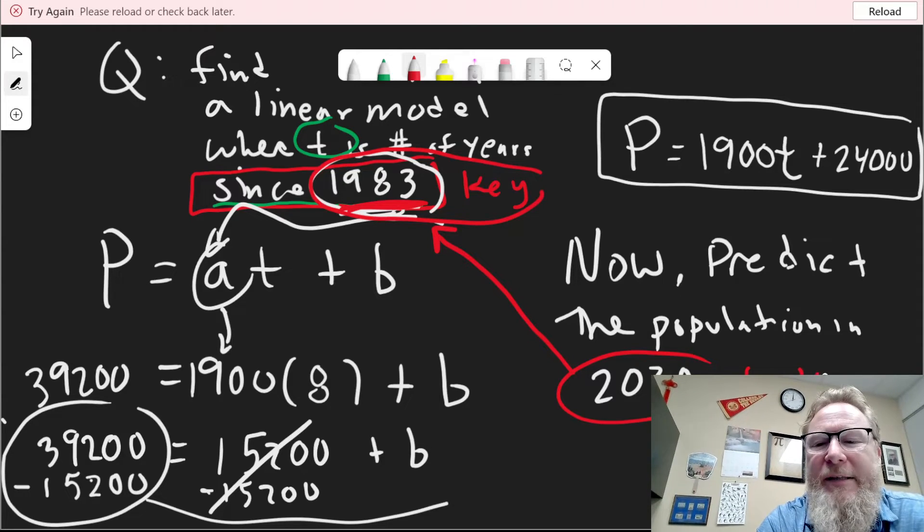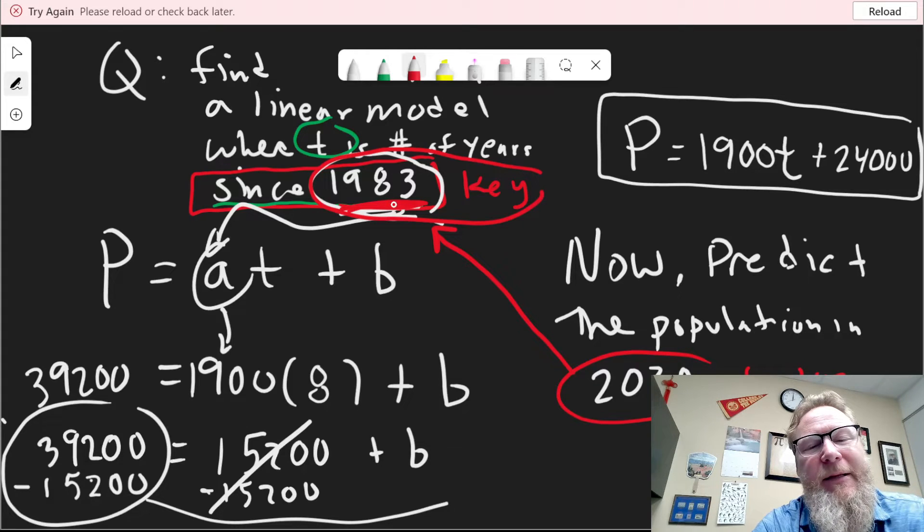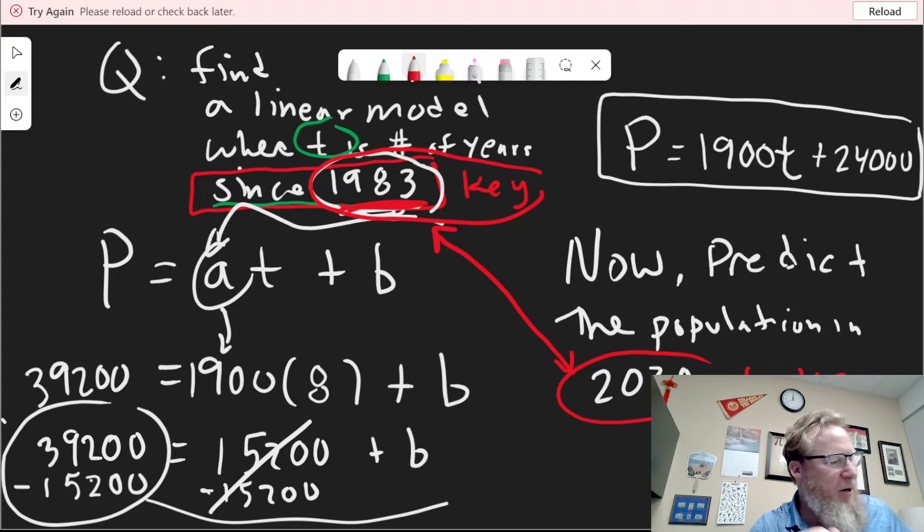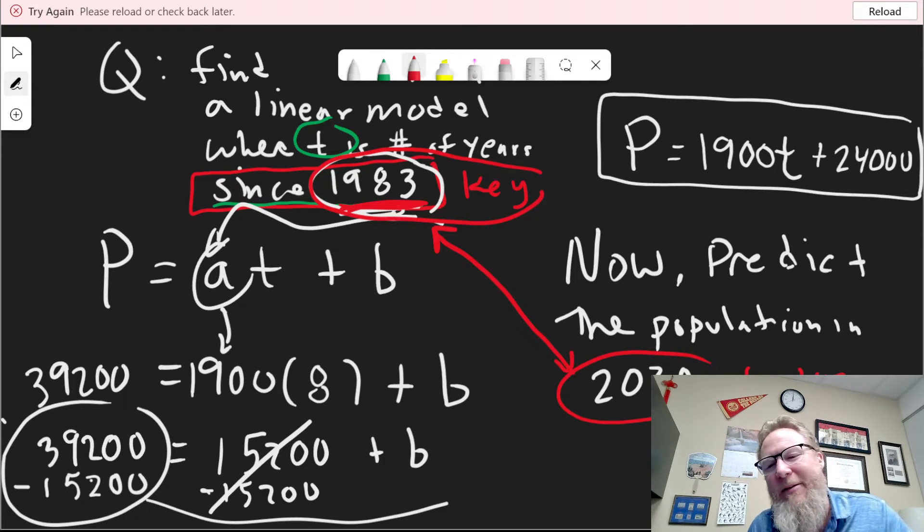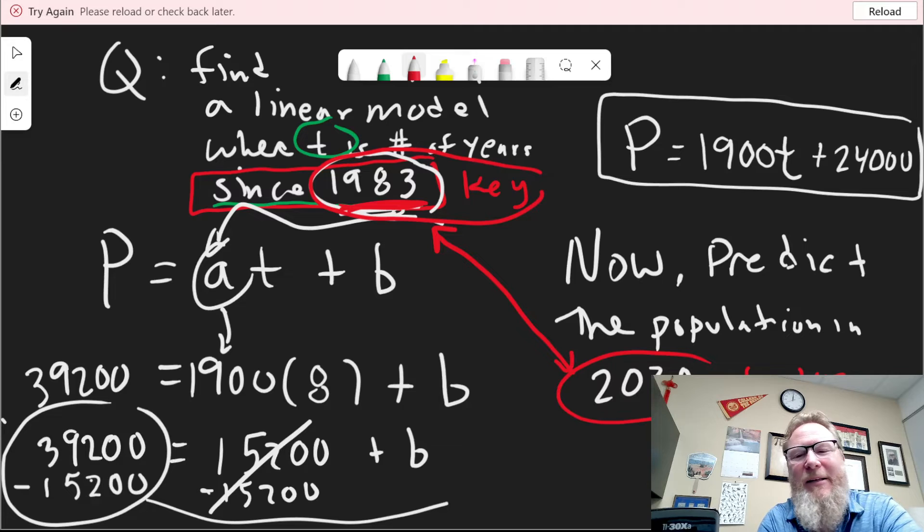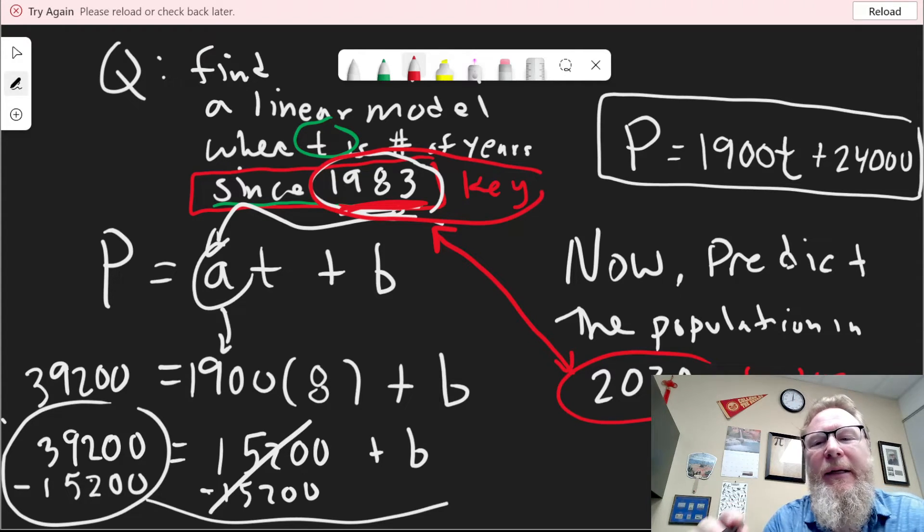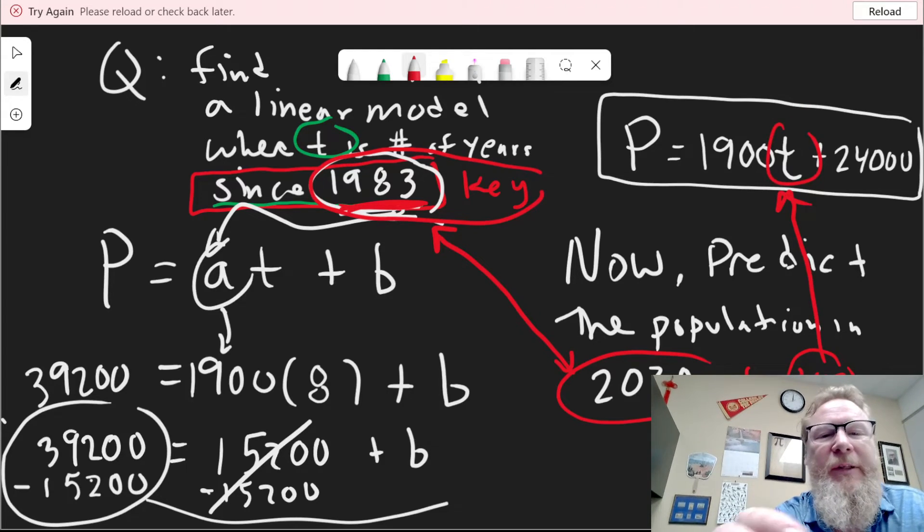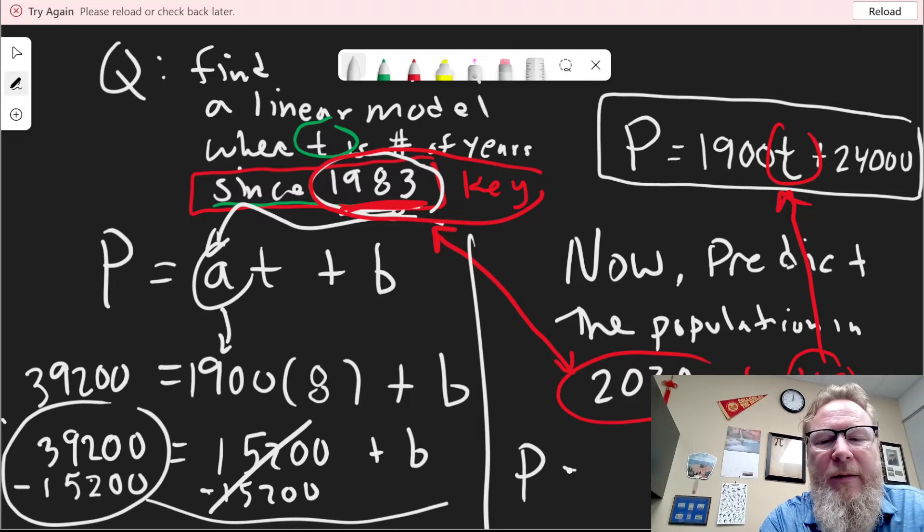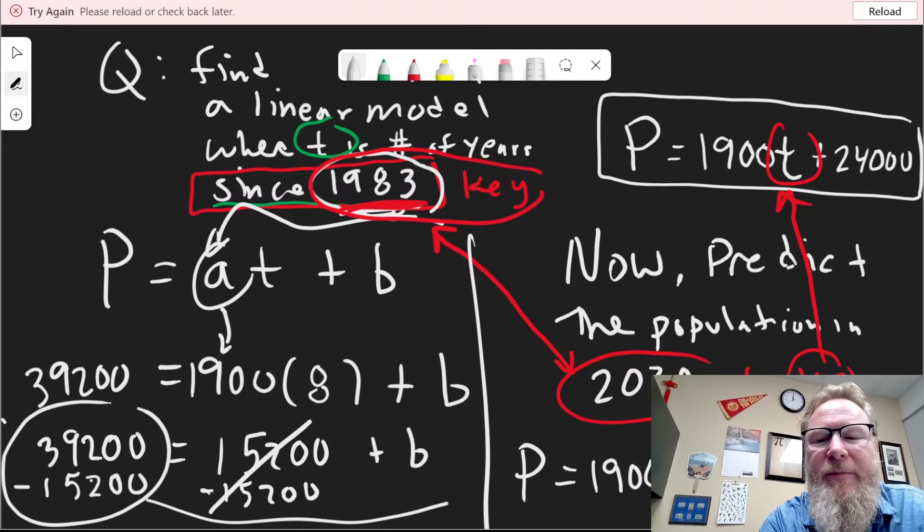Now the key to this, again, is going back to 1983. Don't plug 2030 into your model. It's the number of years since 1983. So T is 47 years. If you were born in 1983, then that means you were 17 in the year 2000. So by the time 2030 comes, 17 plus 30 gives you 47.